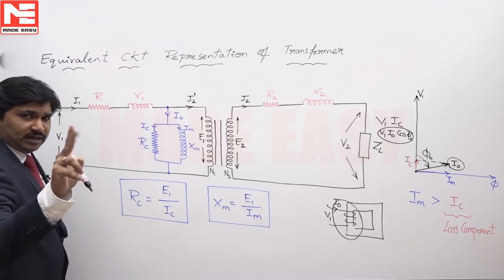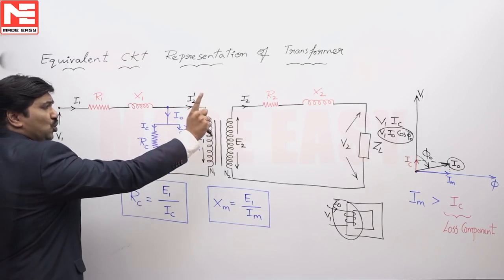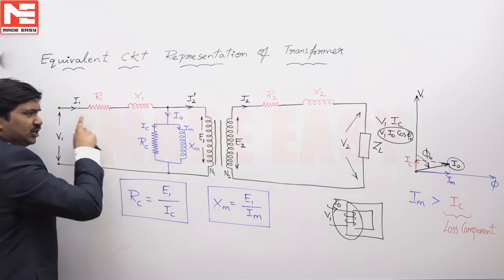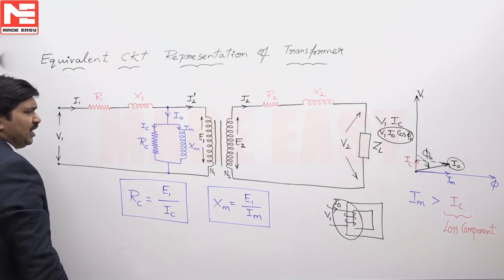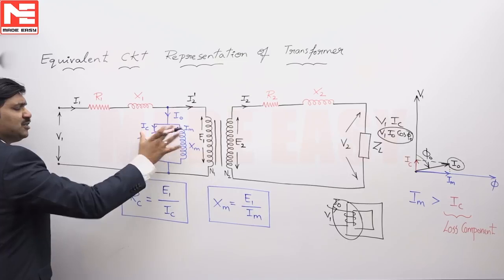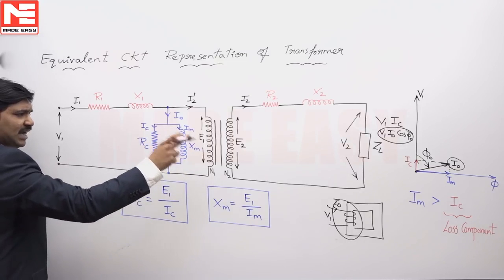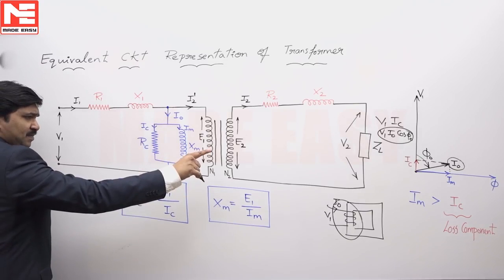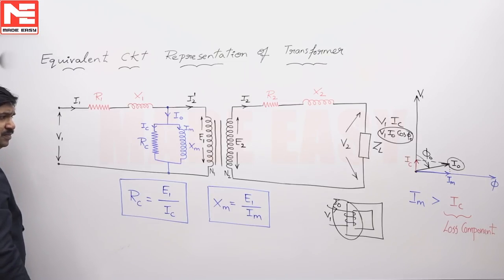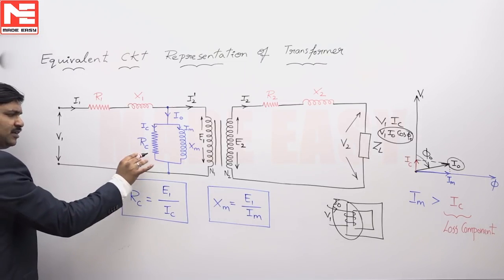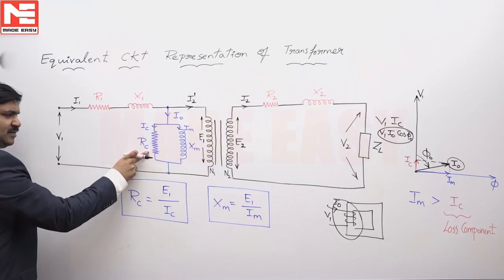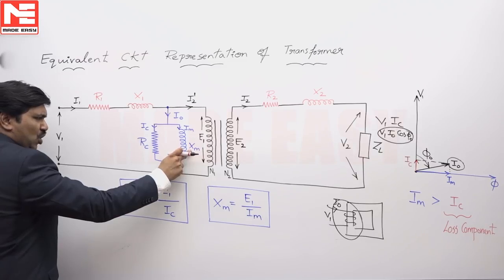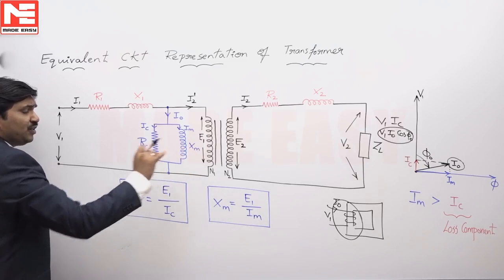To represent I_C, I_M, two currents along with I2 dash load component in primary, we need one more branch, because in one circuit we cannot represent three currents. This is totally again a fictitious branch to represent I_C, I_M. I_C is in phase with V voltage, I_M is 90 degree lagging voltage. That is why to communicate that we use a resistance, we use a reactance.